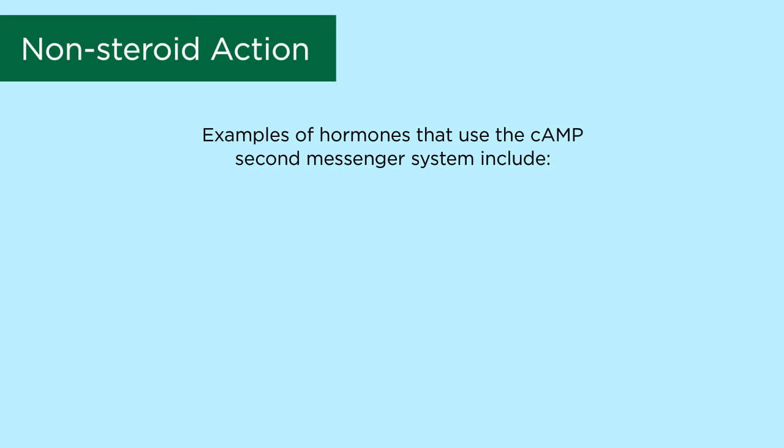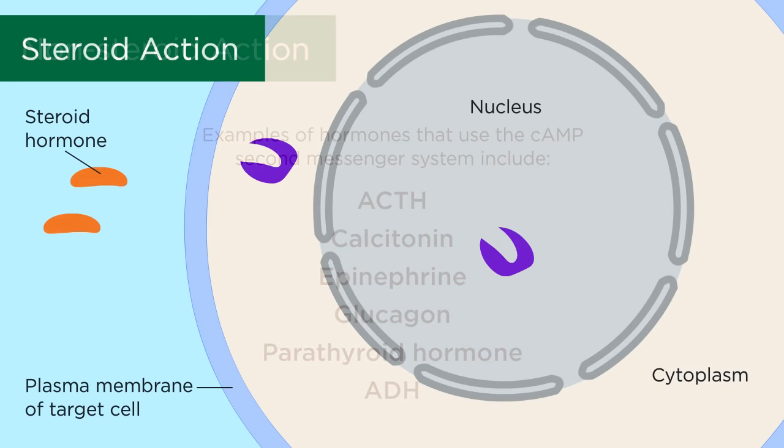Examples of hormones that use the cyclic AMP second messenger system include ACTH, calcitonin, epinephrine, glucagon, parathyroid hormone, and ADH. The second mechanism is the steroid action.